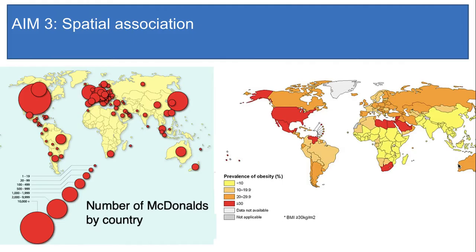Now let's look at low spatial association. If two variables have low spatial association, then they are not found in the same places. Let's compare our map of McDonald's locations to this map of obesity. Is it possible that McDonald's and obesity are correlated? Seems likely. Here's another hypothesis: countries that have lots of McDonald's will also be countries with lots of obesity because eating at McDonald's will make people fat. Let's test it out and compare the two maps.